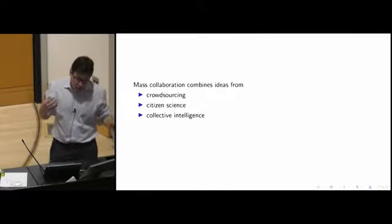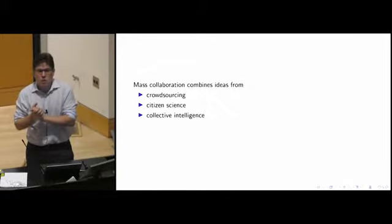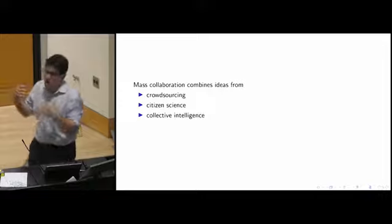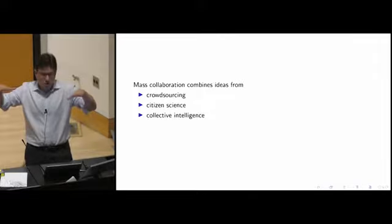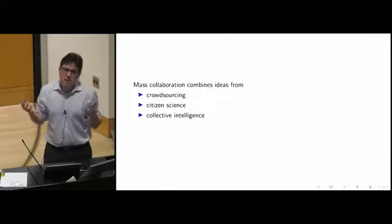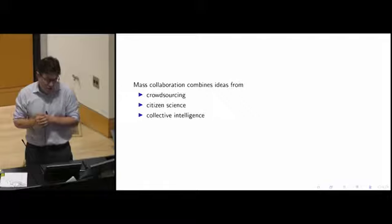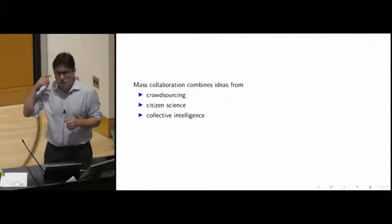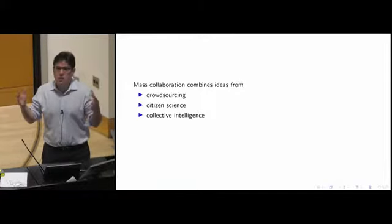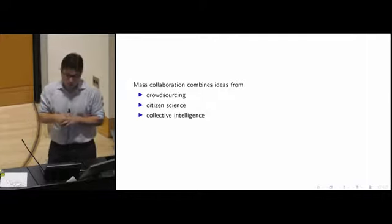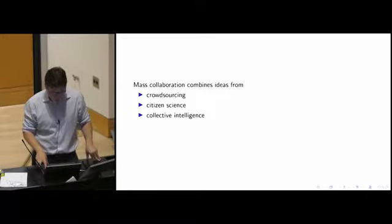Mass collaboration combines ideas from many different communities. Crowdsourcing involves taking a project or problem and sending it out to the crowd to have them work on it. Citizen science is when citizens or non-scientists get involved in the scientific process. Collective intelligence is the idea that many people working together can be somehow more intelligent than those people are individually. Mass collaboration is combining ideas from all of these sub-communities.